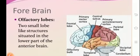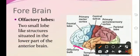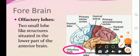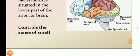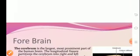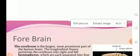Discussing the forebrain — firstly the olfactory lobes. There is a bulb-like structure situated in the lower part of the anterior brain, referred to as the olfactory lobes. The basic function of the olfactory lobe is that it controls the sensation of smell.